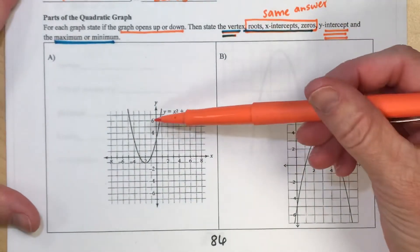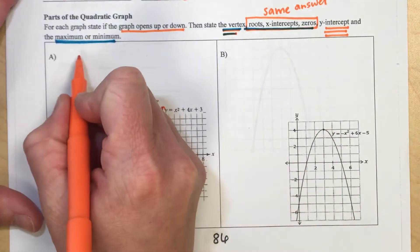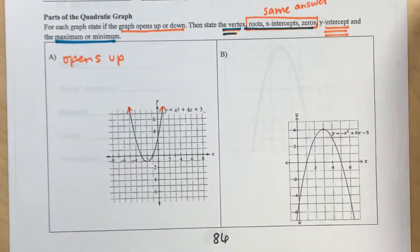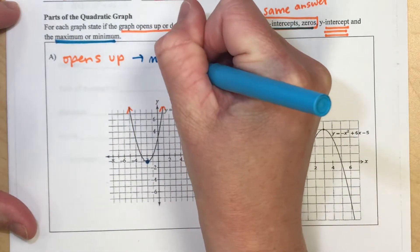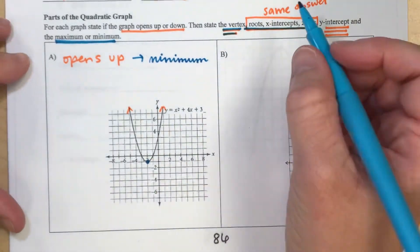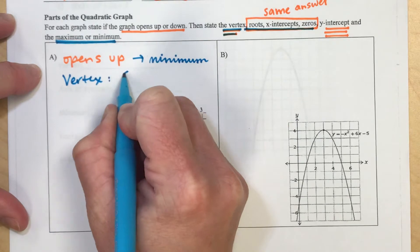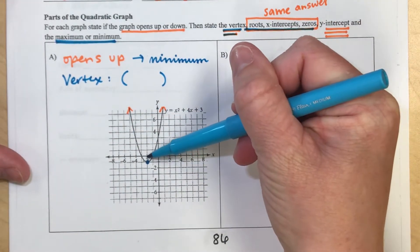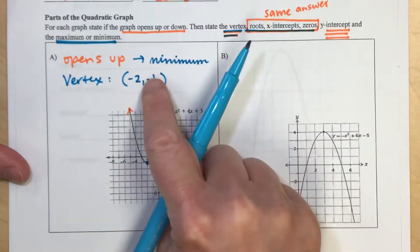Okay so the first picture here I see opens upwards so this line is going to continue going up and so first I'm going to write opens upwards. So if it opens up the lowest point down here is going to be a minimum. So minimum and now let's actually locate what that minimum is. So the minimum is our vertex in this picture and that's going to be a point, a location, an x comma y, and here it looks like from the origin we went left 2 down 1, so negative 2 for the left 2 and down 1 is minus 1 for the y.